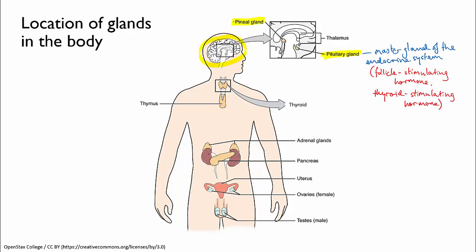The pineal gland is also located in the brain, and produces hormones associated with sleep regulation. Melatonin is one of these.